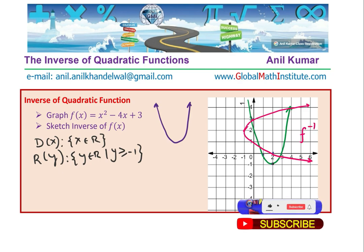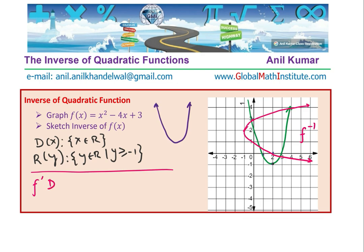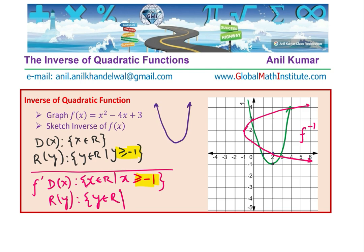You can clearly see that for the inverse, the domain and range have swapped as expected. The domain is now restricted: x belongs to real numbers where x is greater than or equal to minus 1. So the range of the original becomes the domain of the inverse. As far as the range of the inverse is concerned, y belongs to all real numbers — no restriction on the range. So we have sketched both the function and the inverse using factored form.